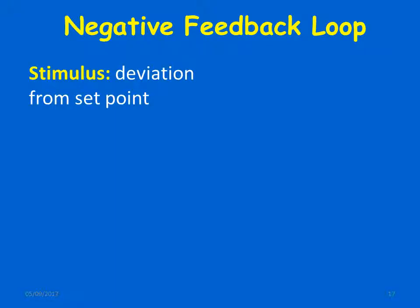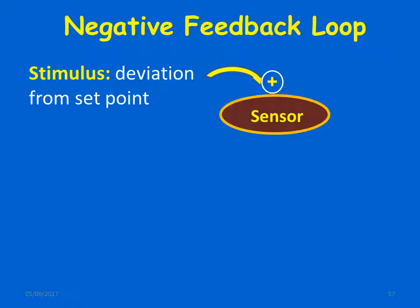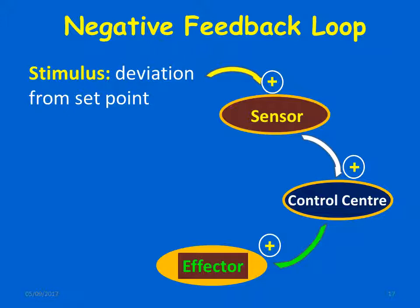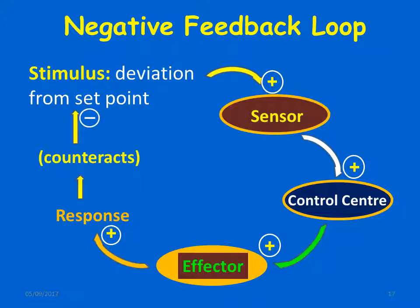In the negative feedback loop, a stimulus — a deviation from the set point — is sensed by the receptors. This information is carried via afferent nerves to the control center, which controls the set point. Information is then sent along efferent pathways to the effector organ. The response counteracts the deviation from the set point, and thereby the negative feedback mechanism works.